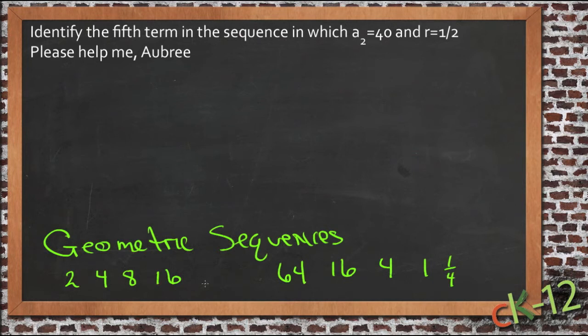What we do is we have a certain number we call the first one in the series, a₁. And then each successive number is multiplied by some amount, and we call that amount r. In this case r would be 2, and in this case r would be 1/4, because that's the number that we multiply each of these by to get the next one.